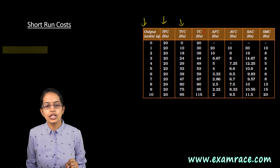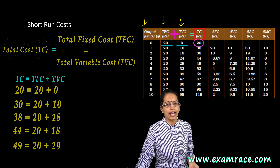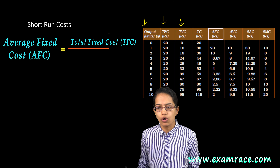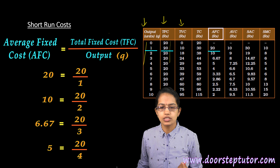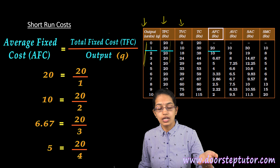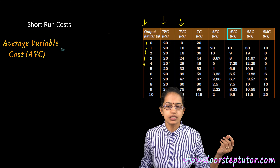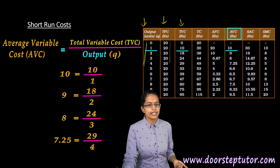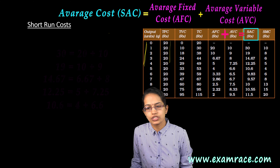What is total cost? Total cost is the sum of total fixed cost plus total variable cost. Average fixed cost is the total fixed cost divided by the quantity Q. Similarly, average variable cost is the total variable cost divided by the quantity. Average cost is the sum of average fixed cost plus average variable cost.